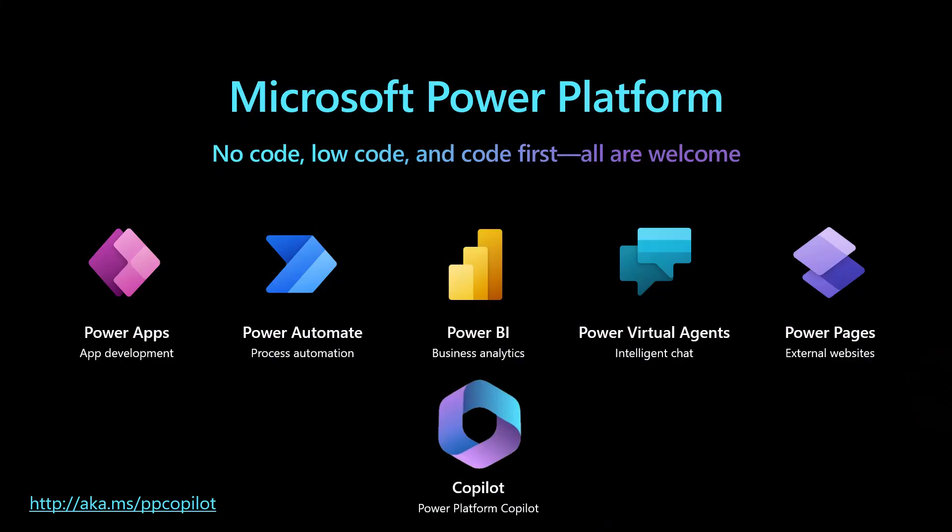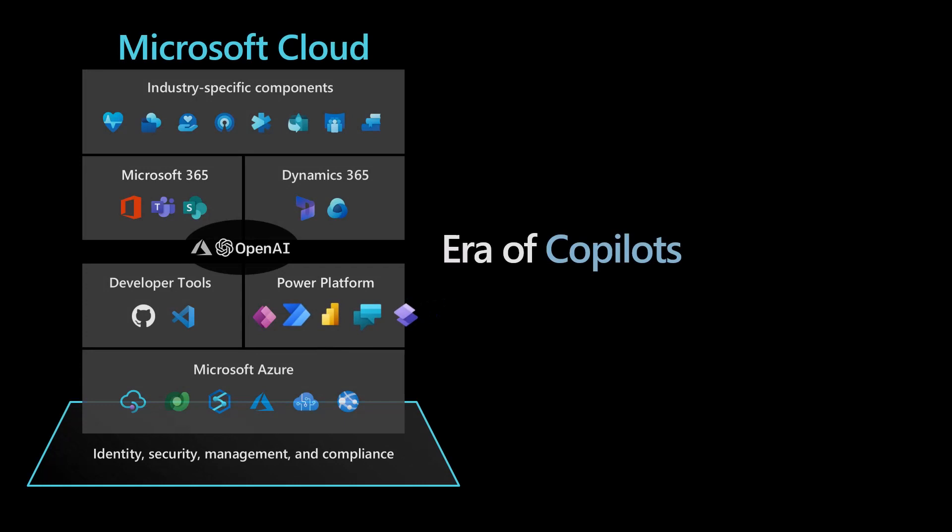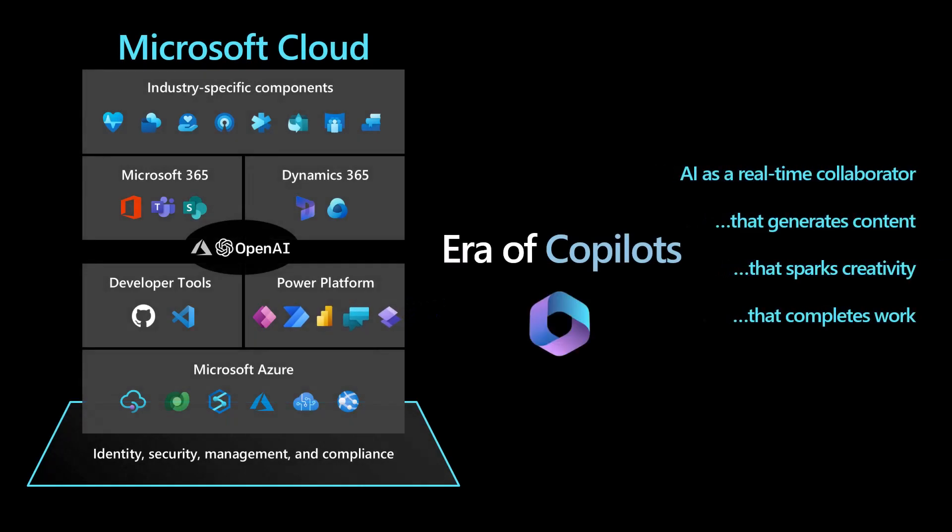Copilot is part of the Power Platform and is a Generative AI capability available within it. Because of the fully integrated Microsoft Cloud and our investment in OpenAI, we're able to apply Generative AI — large language models that are already trained — into the very fabric of our products. The copilots available within the Microsoft Cloud are about making AI a companion to help do your job better and faster, so AI becomes your real collaborator that generates content, sparks creativity, and completes your work.